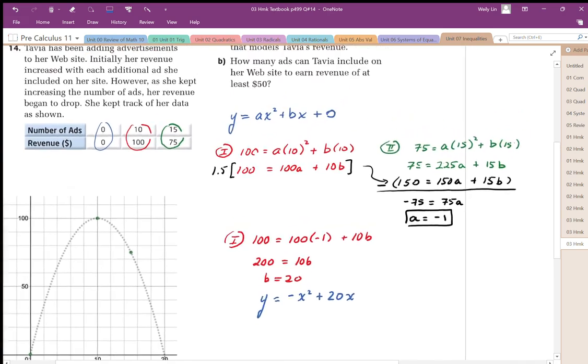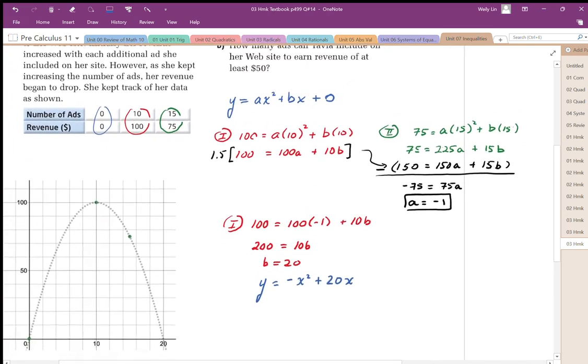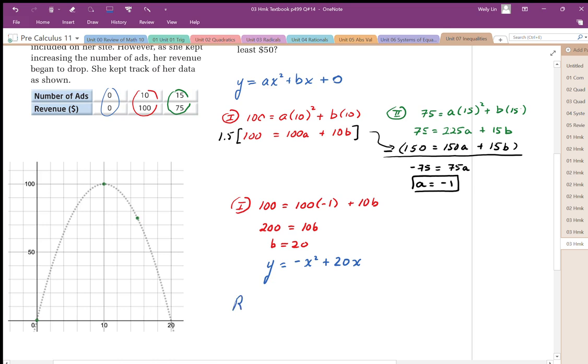The inequality that models her revenue is going to be below that graph. So the y value of this revenue is going to be below that equation. And x represents the number of ads.